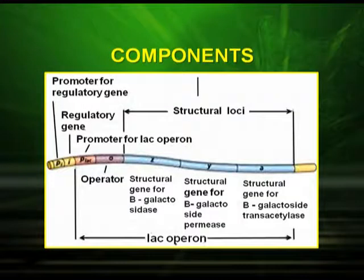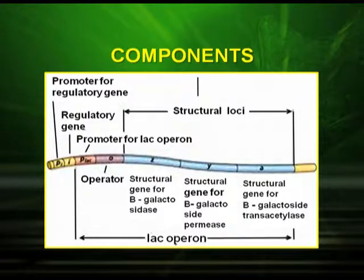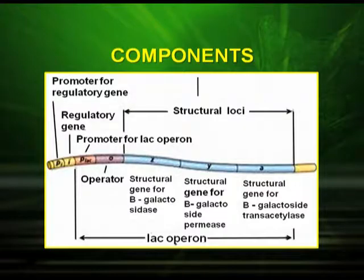Now let us study the different components of the lac operon. It consists of a regulator gene, a promoter gene, an operator gene, and structural genes. There are three structural genes: the structural gene for beta-galactosidase, the structural gene for beta-galactoside permease, and the structural gene for beta-galactoside transacetylase.